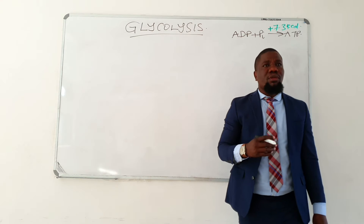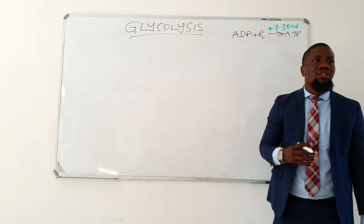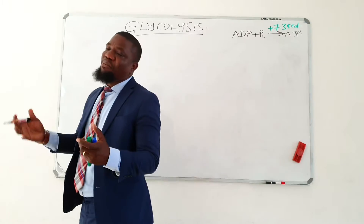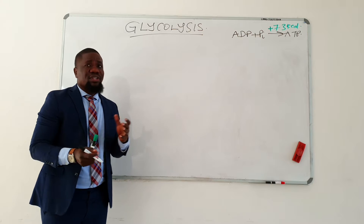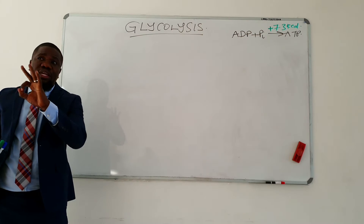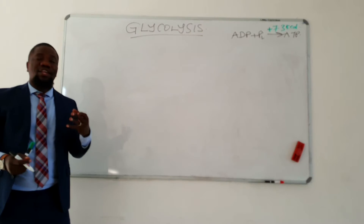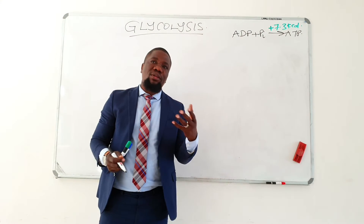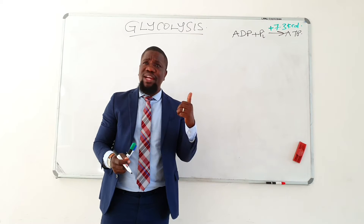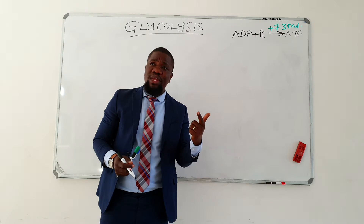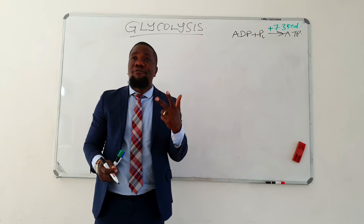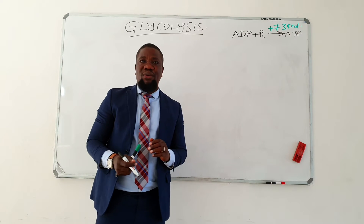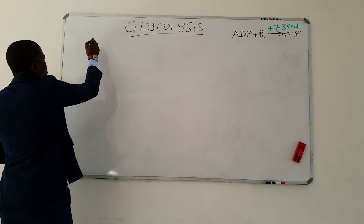Of these 10 cascades of reactions, three are irreversible. The most interesting part is that these same three irreversible reactions are catalyzed by regulatory enzymes. Reactions 1, 3, and 10 are irreversible and are catalyzed by the regulatory enzymes of glycolysis.